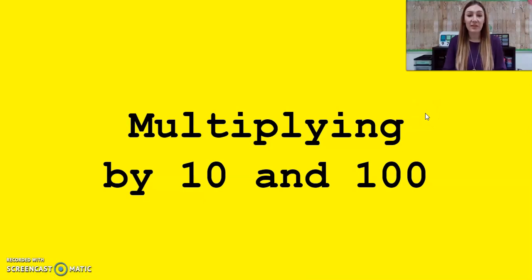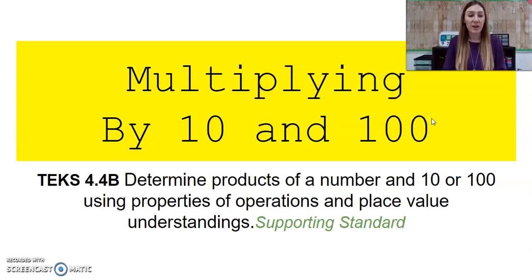Hey mathematicians, today our lesson is over multiplying by 10 and 100. Our TEKS is 4.4B, determine products of a number and 10 or 100 using properties of operations and place value understandings.